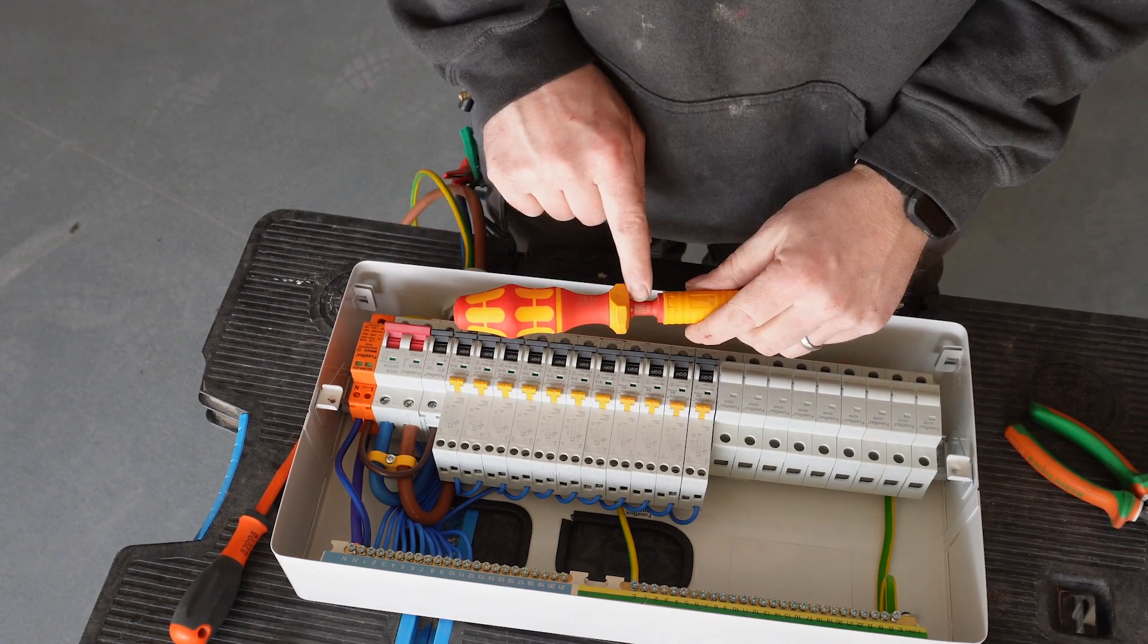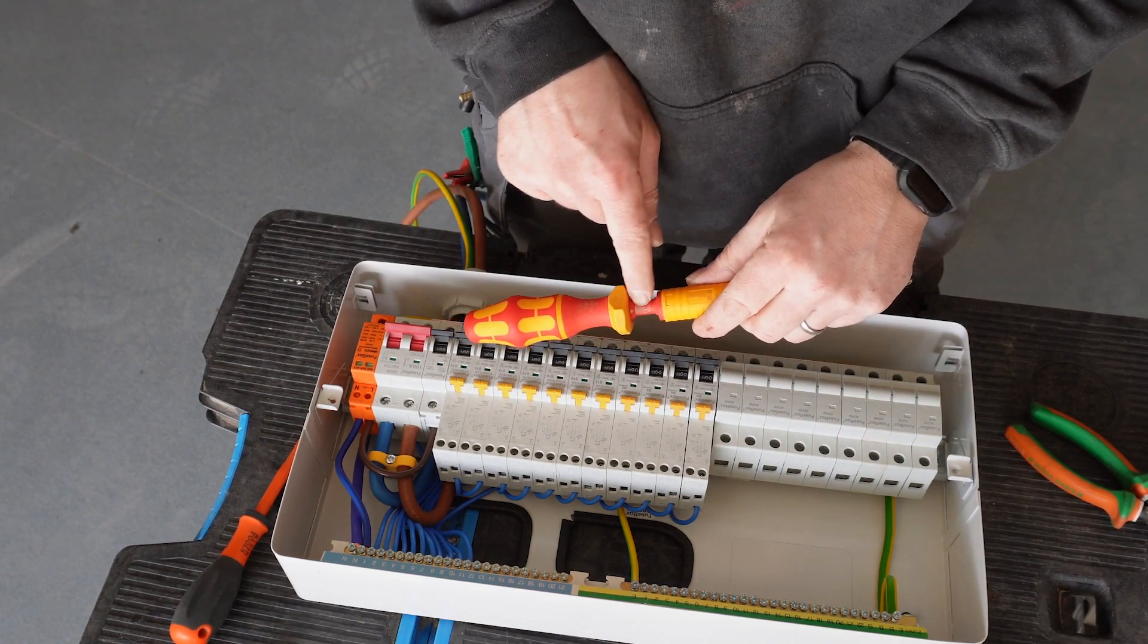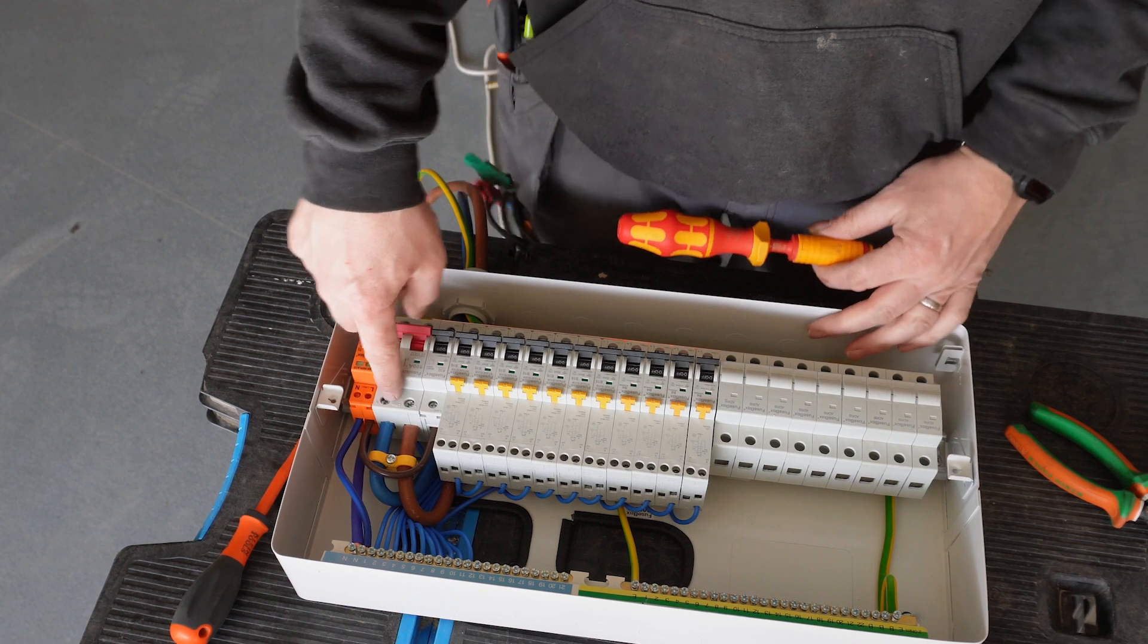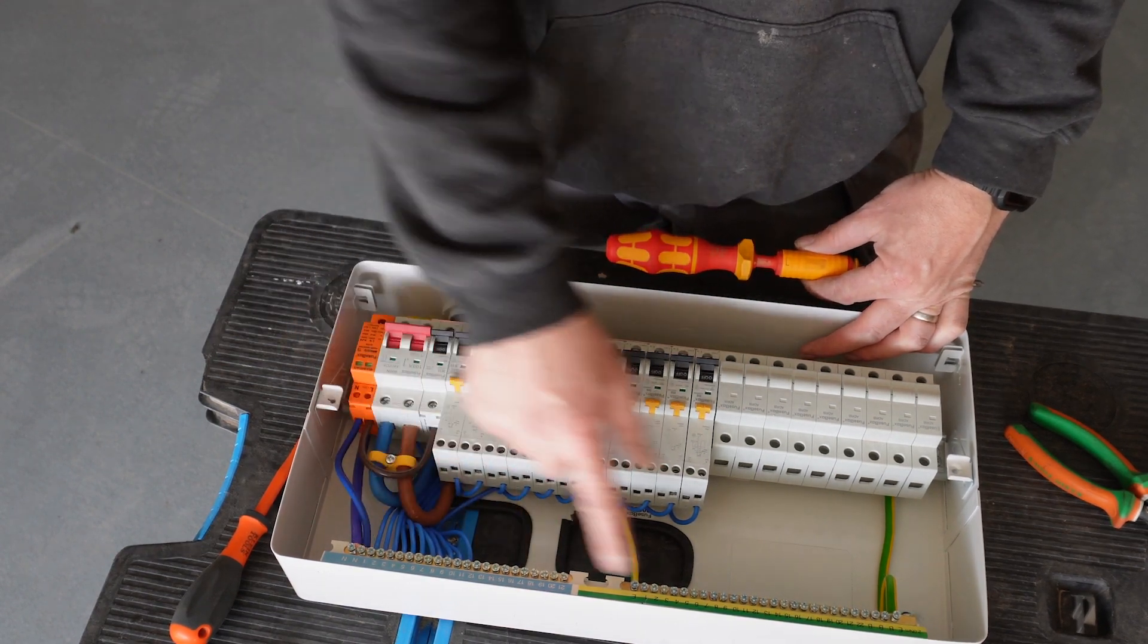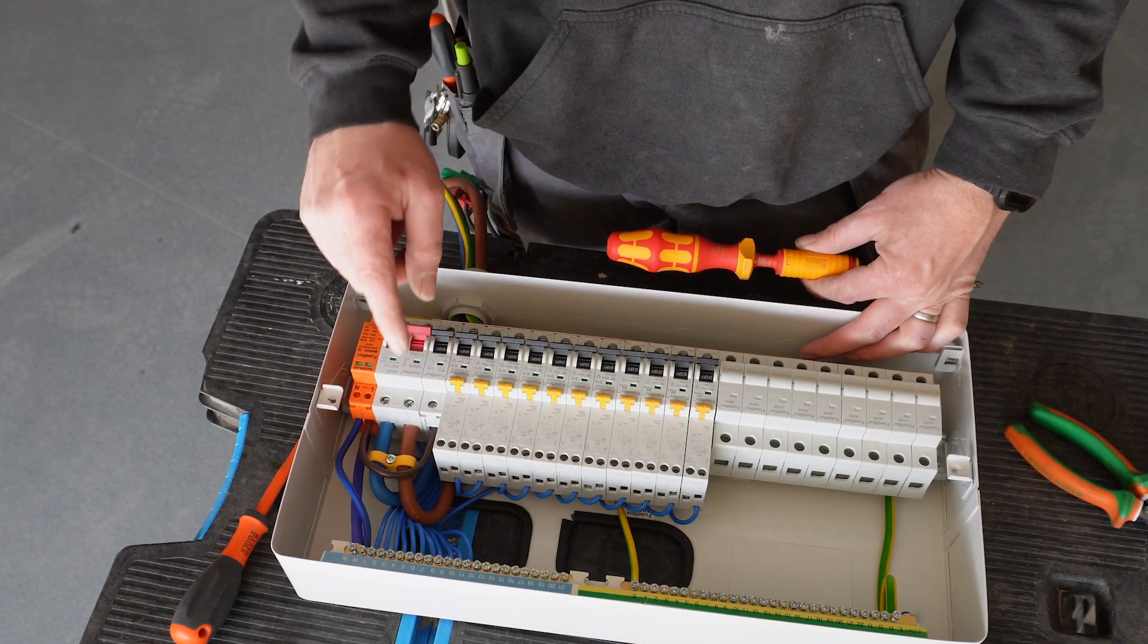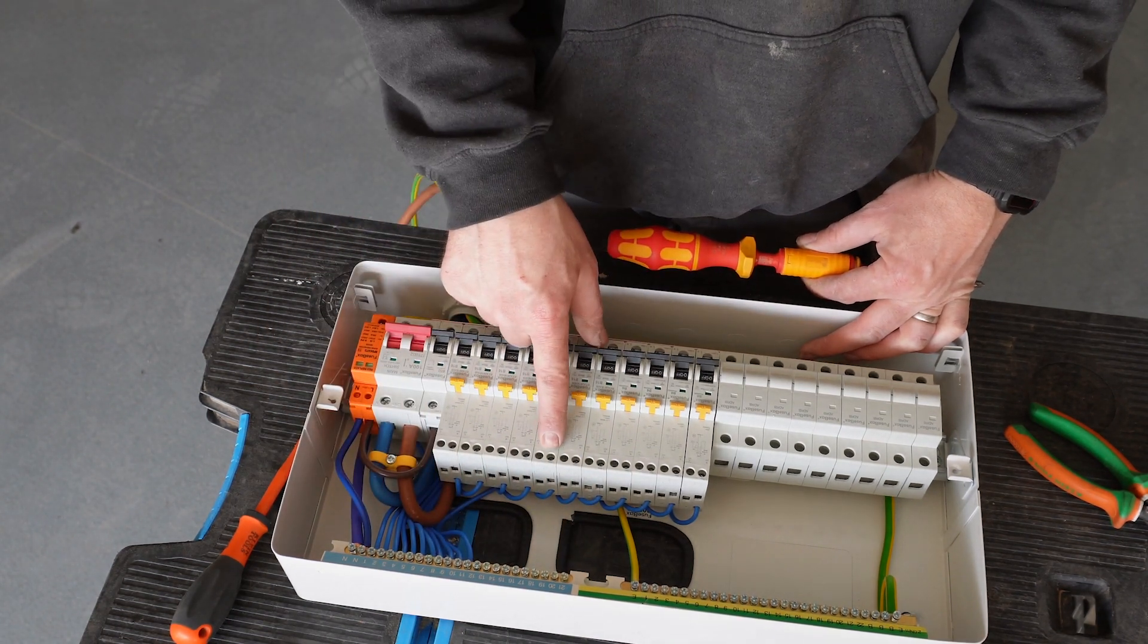Torque screwdriver. On here we've got a set measurement. The main switch is 2.5 newtons. I've got 2.5, 2 newtons across here, and then these go down to 1.2.